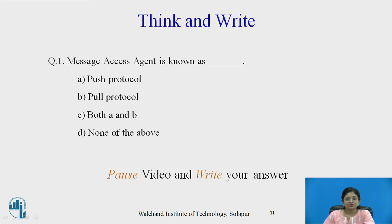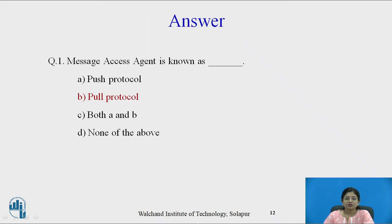Pause the video and write down the answer. Message Access Agent is known as: push protocol, pull protocol, both A and B, or none of the above? The answer is pull protocol, because the message access agent pulls the mails from the mail servers.